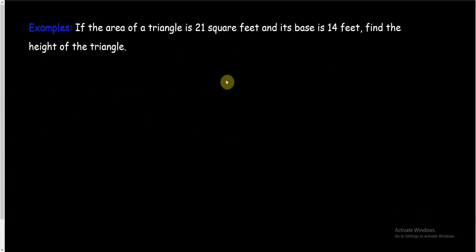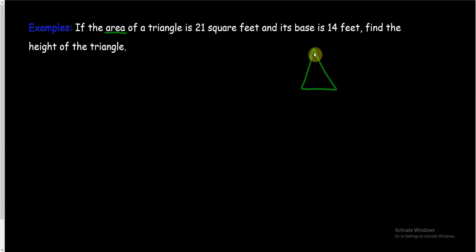This one's not too hard. If the area of a triangle is 21 square feet and its base is 14 feet, find the height of the triangle. We're going to try to first understand the problem. It looks like they're giving me the area of a triangle, telling me one of the pieces — its base — and I'm supposed to find the height. What do you know about the area of a triangle? The formula is: the area of a triangle is one half base times height.